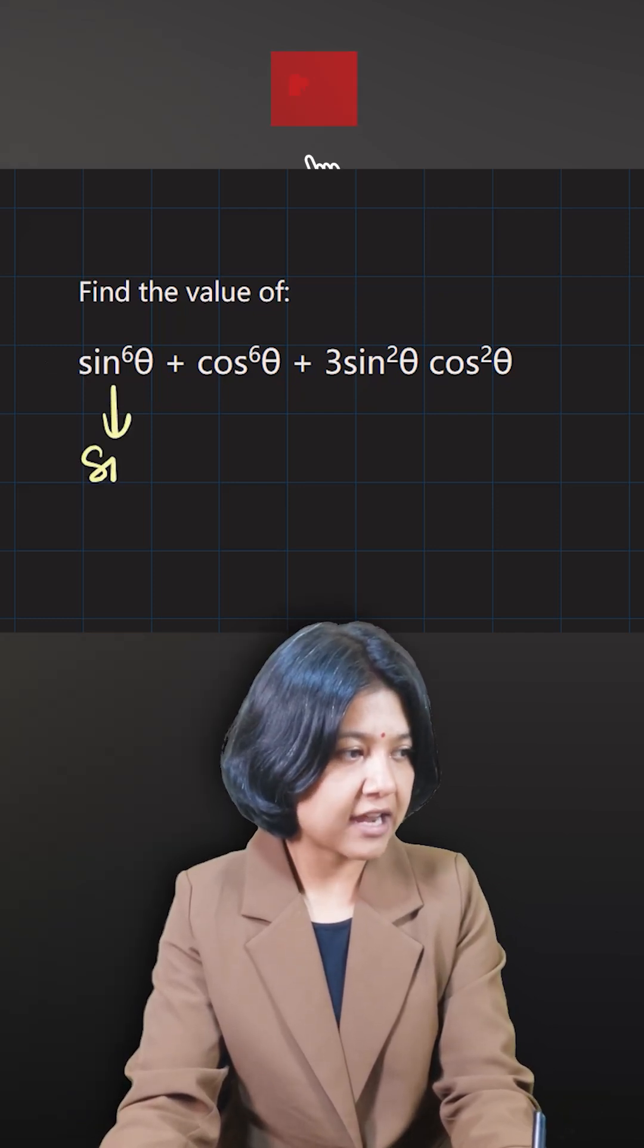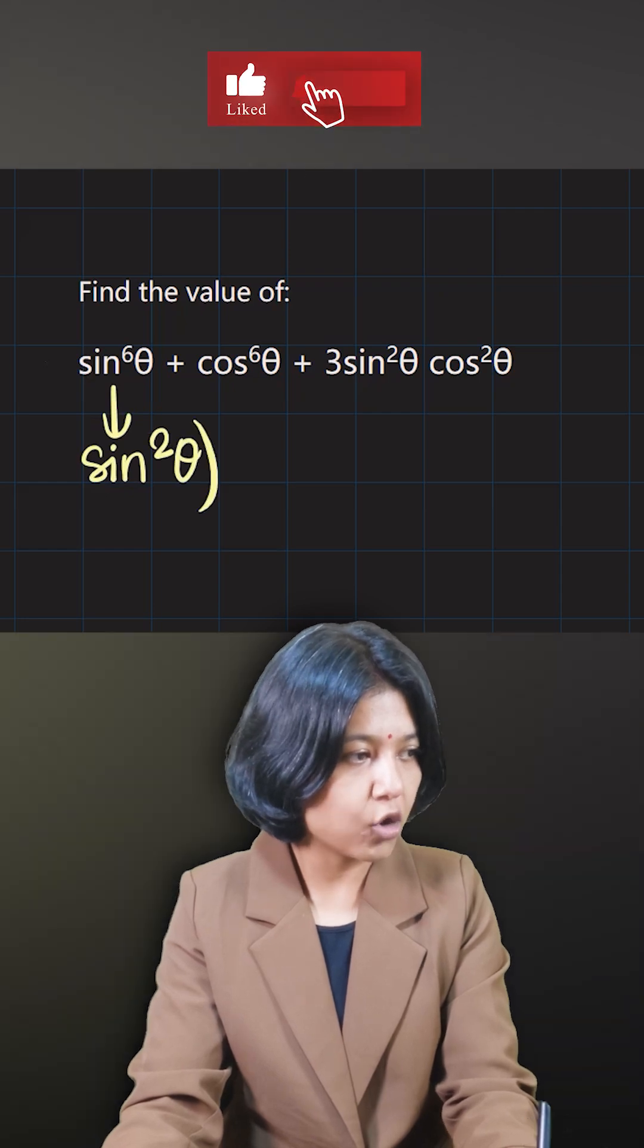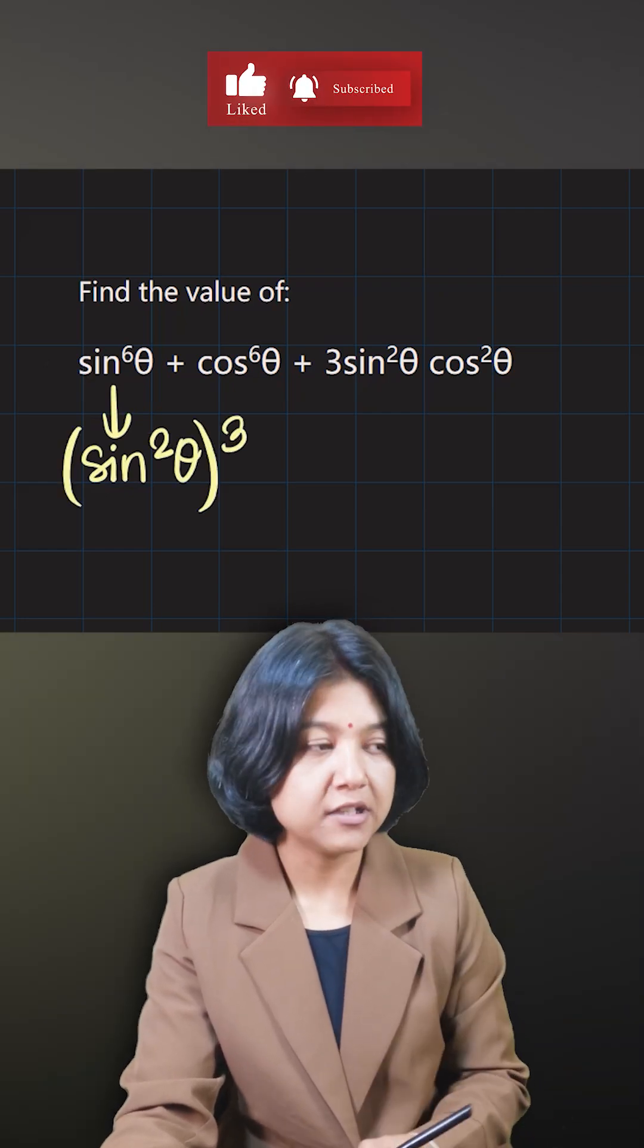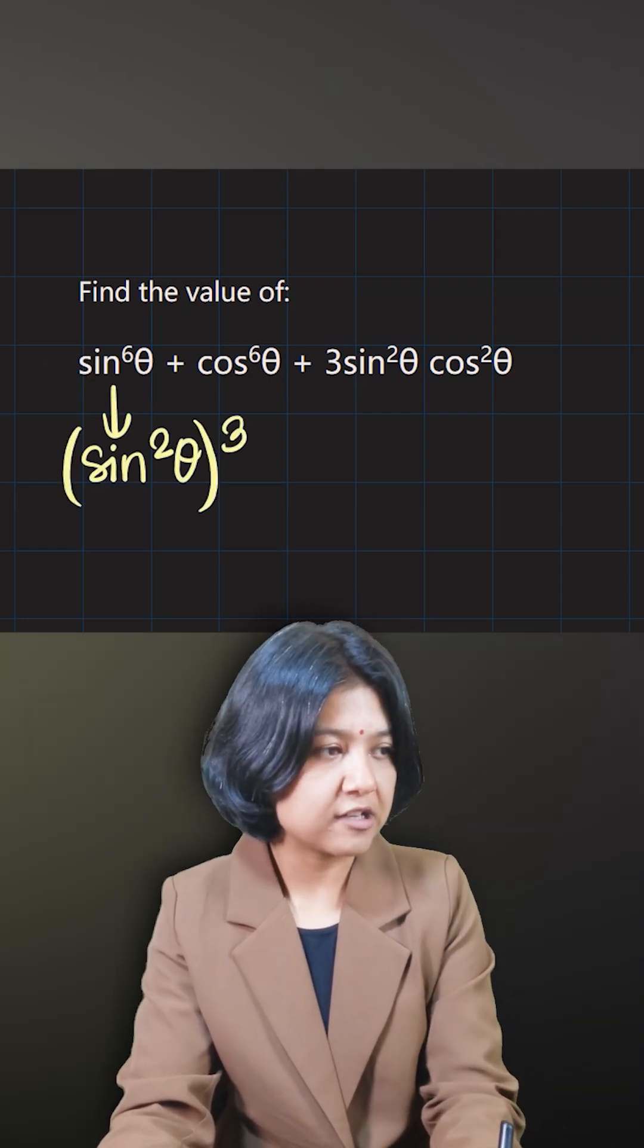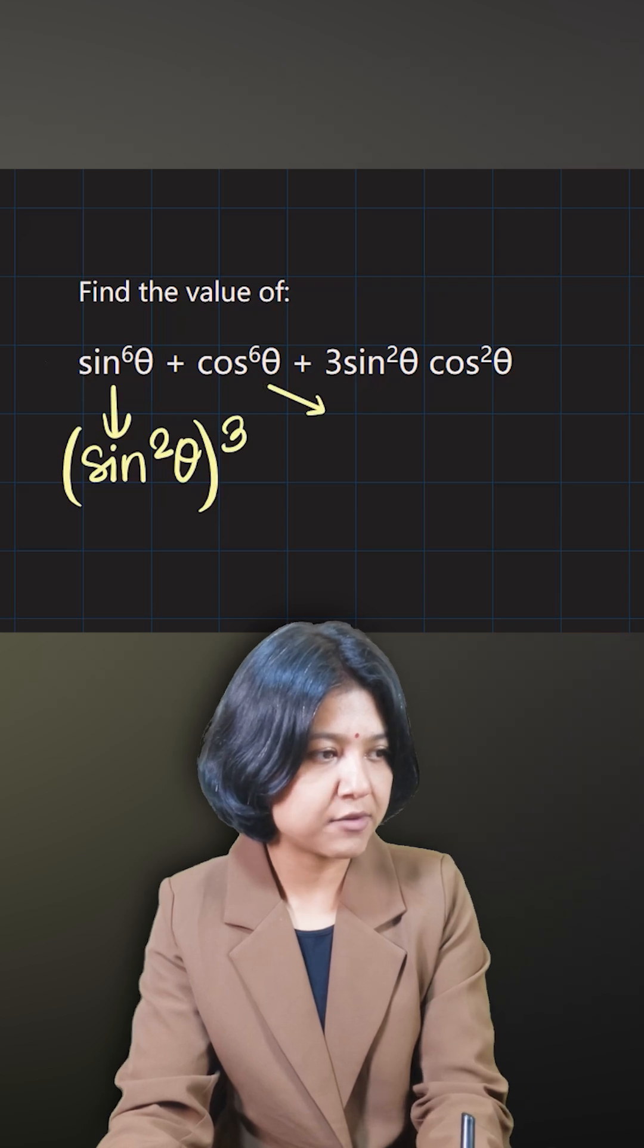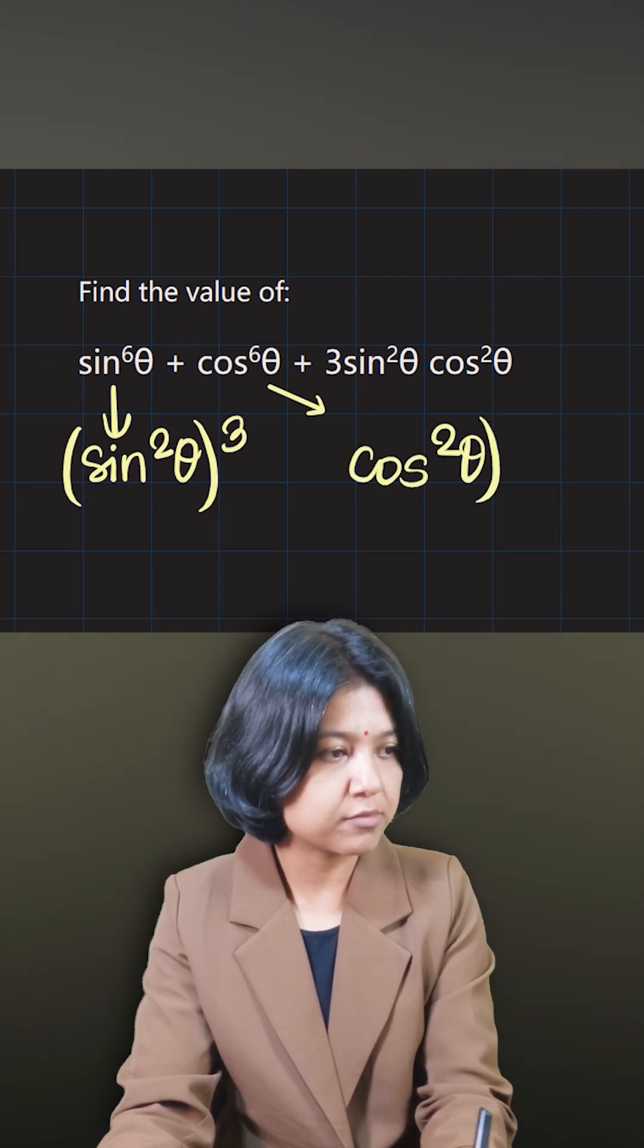I can write that as sine squared theta whole cubed because that could be the other way I could represent. Similarly, cos to the power of 6 theta can be represented as cos squared theta whole cubed.